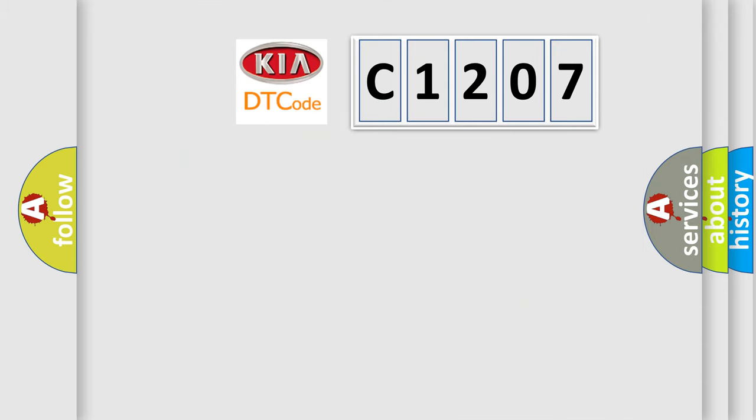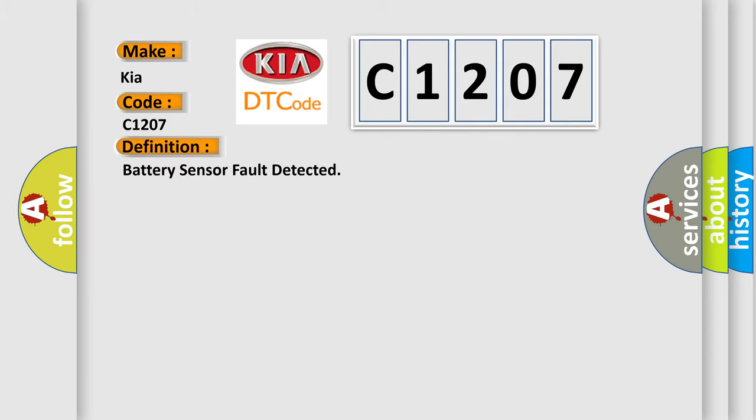So, what does the diagnostic trouble code C1207 interpret specifically for KIA car manufacturers? The basic definition is battery sensor fault detected.